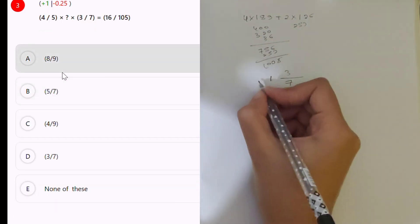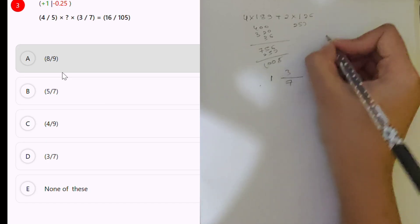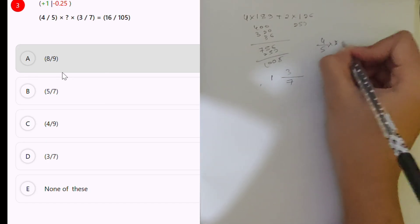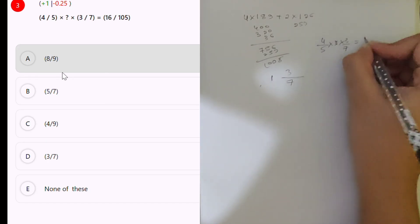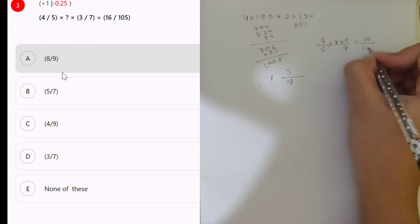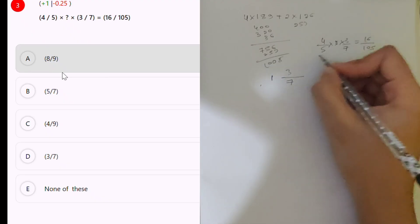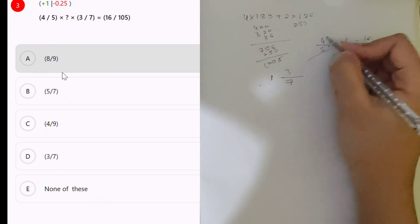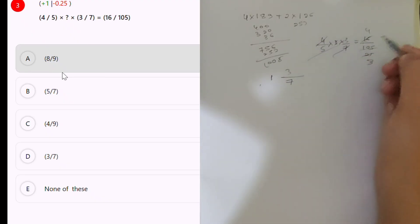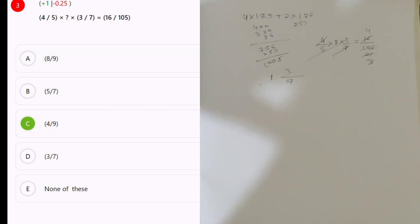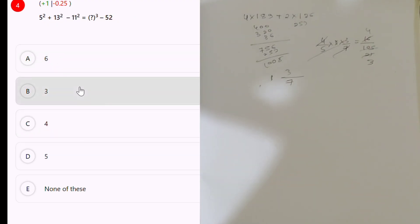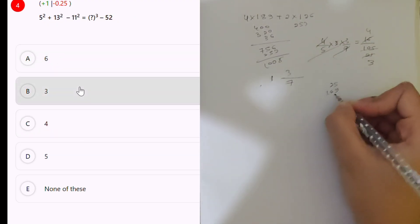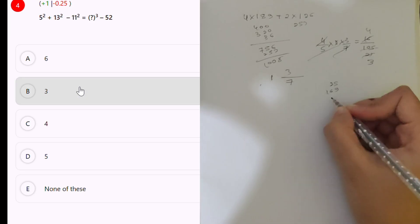Four by five into four by five into x into three by seven, which is equal to sixteen divided by five. So five two is five, ones are seven, threes are four. Four by nine is the answer.